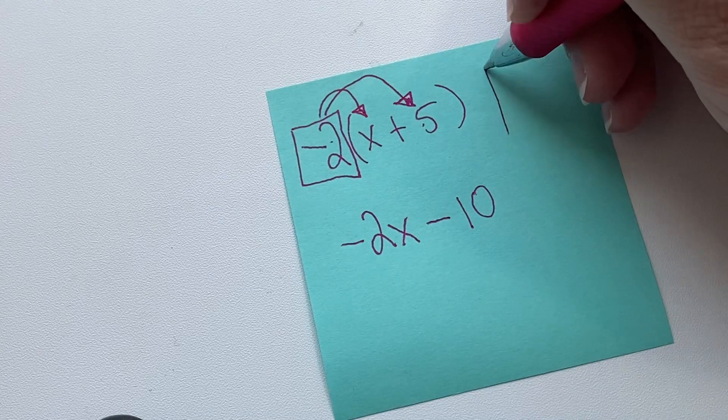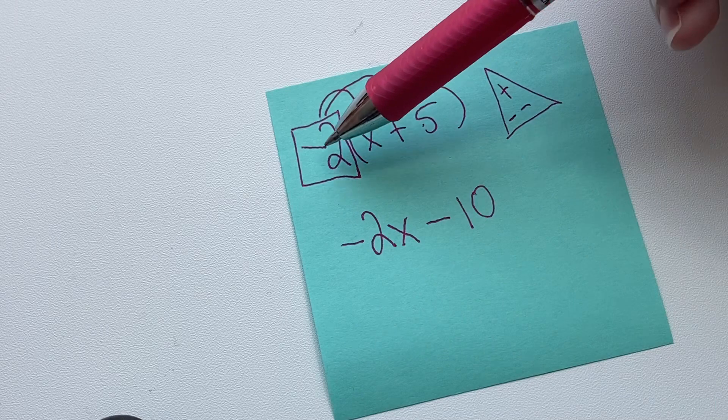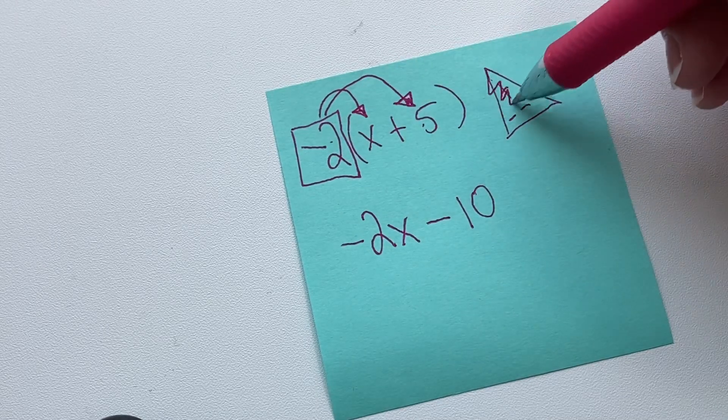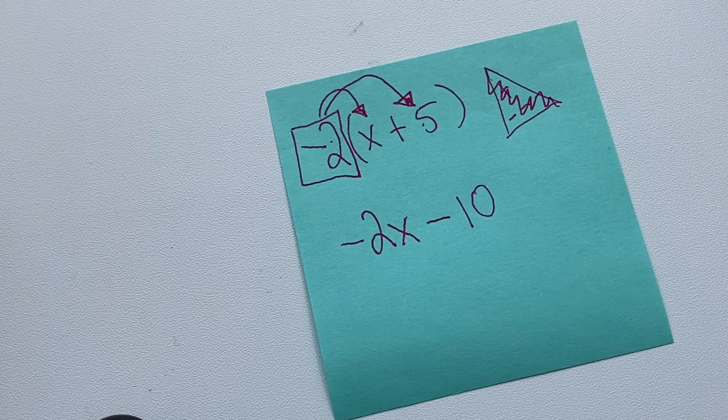So that's all you have to do. And you can always use this little guy, a negative and a positive. So just scratch out negative and positive. Okay, so that's one example. Let's check out another example.